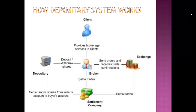How does the demat system work? The demat system works with a systematic settlement system. We have the depository organization — NSDL or CDSL. We have the client, who is the one who invests, buys, or sells shares. The client has opened a demat account. Between the depository system and the client, there is a broker. The broker provides the service of opening the demat account to the client by approaching the demat organization — NSDL or CDSL. The client places an application to the broker for opening a demat account.